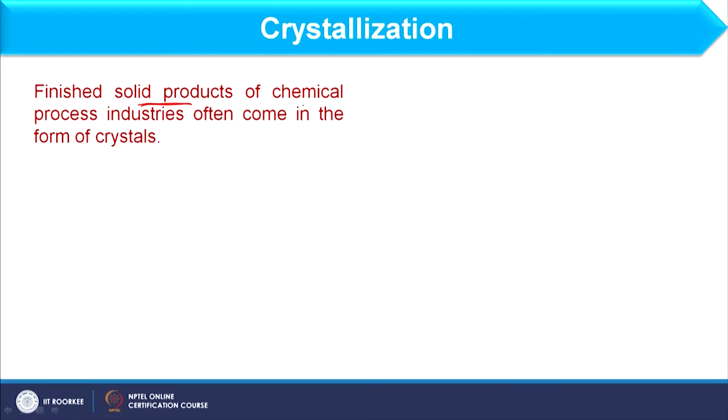So what is basically crystallization? Crystallization is the process to form the product in a definite shape. Usually we do not focus on the shape — whatever product we want, if that product is of acceptable quality, we consider that. But in chemical engineering processes, some products are formed in a definite shape. I am not speaking about the size; size may vary, but shape will be very definite. That shape we call a crystal, and the process by which it is made, we call that crystallization. Finished solid products of chemical process industries often come in the form of crystals.